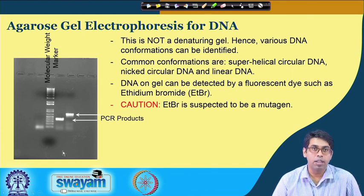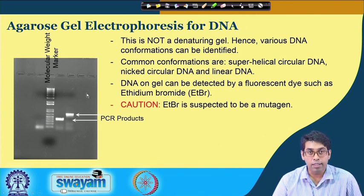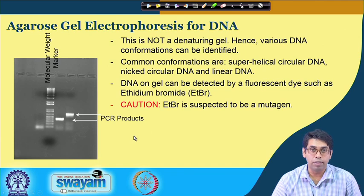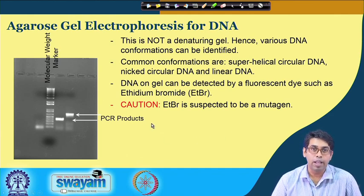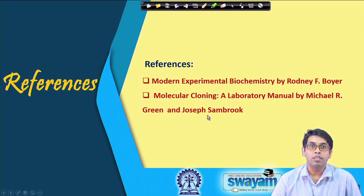Once the gel is run, the DNA bands are transparent and need to be detected. A very common method is to use a fluorescent dye; the most popular is ethidium bromide. One can add ethidium bromide to the agarose solution itself before running, or after running, the gel can be soaked in ethidium bromide solution and then visualized on a UV transilluminator. A word of caution: ethidium bromide is suspected to be a mutagen, so one must be extremely careful when handling ethidium bromide or agarose gels soaked in it, and they must also be discarded in a very careful manner. That is all for now. Thank you.